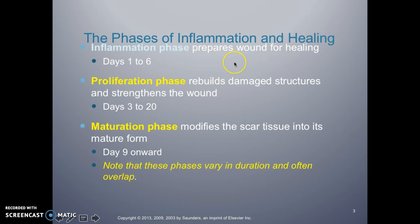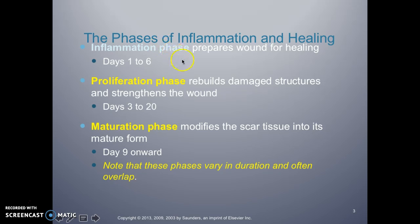There are actually four different phases, but we're going to concentrate on the primary ones. The first phase is the inflammation phase, which prepares a wound for healing and usually occurs between days one and six. You'll realize there's going to be an overlap — when I say days one through six, sometimes the next phase starts on day two, sometimes not until about day six. So there's often an overlap between them.